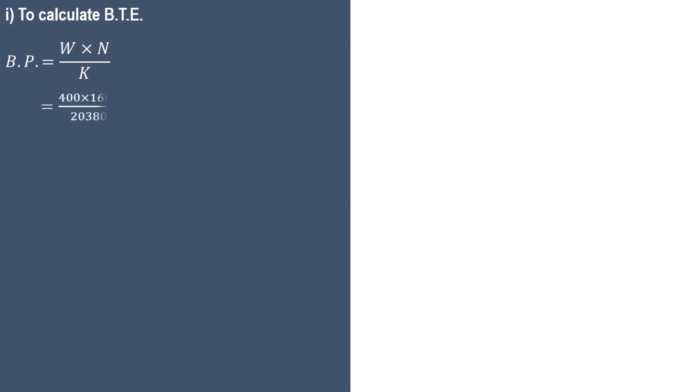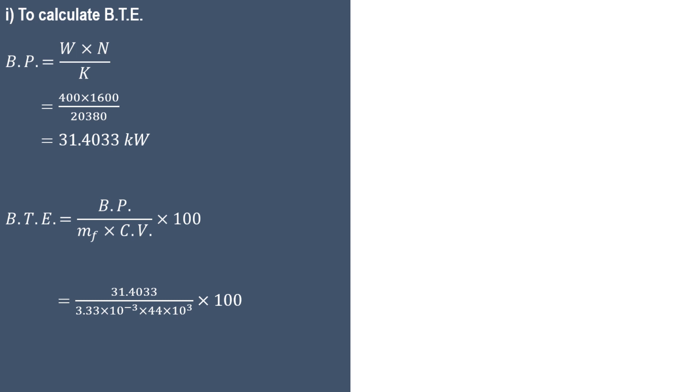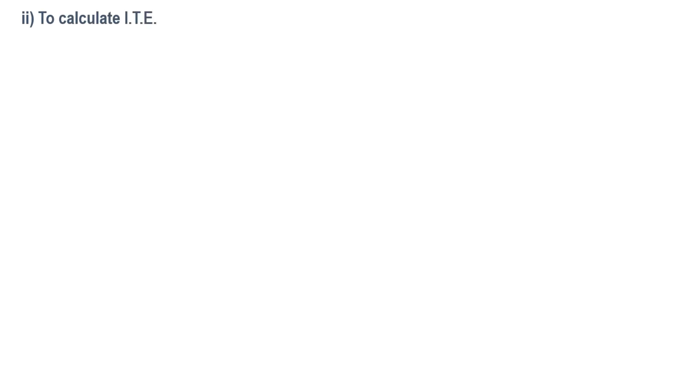Now we calculate brake thermal efficiency. The empirical relation for brake power is BP = W × N / K. Substituting W = 400 N, N = 1600 RPM, and K = 20,380 gives brake power = 31.4033 kW. Brake thermal efficiency equals brake power divided by heat supplied, which is mass of fuel times calorific value. So it is 31.4033 / (3.33 × 10⁻³ × 44 × 10³ × 1000) = 21.43%.